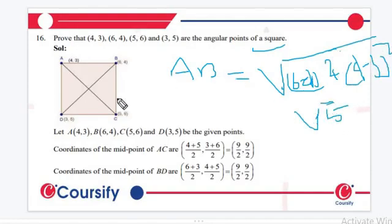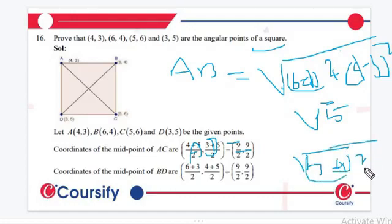And AB, and this is AD. For finding the value of AD, we can write 3 minus 4 whole square plus 5 minus 3 whole square. So it is equals to root 5. This is the square.